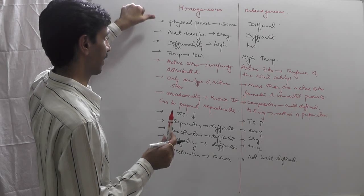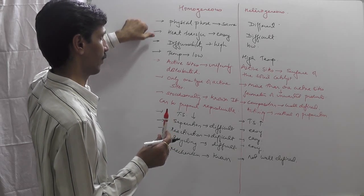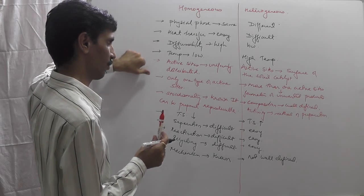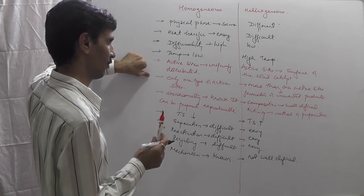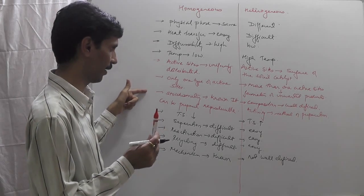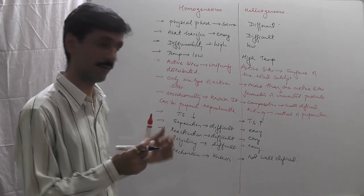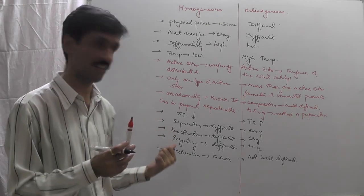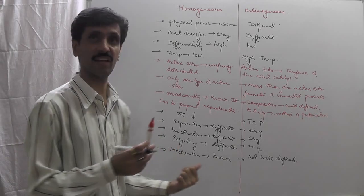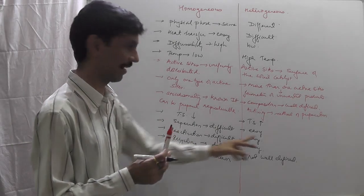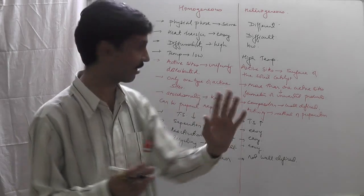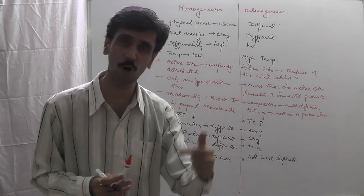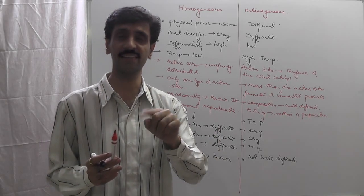To summarize the comparison: the twelve points are — physical phase, heat transfer, diffusibility, temperature conditions, active sites distribution, type of active sites, stoichiometry, thermal stability, separation, reactivation, recycling, and mechanism. Both homogeneous and heterogeneous catalysis have their own pros and cons.